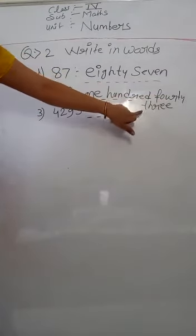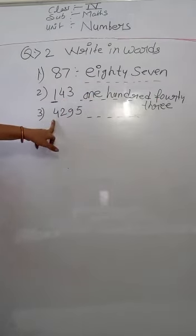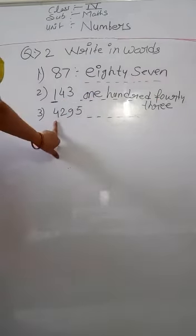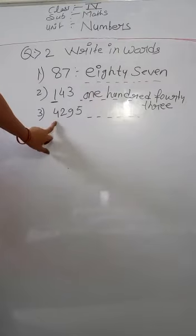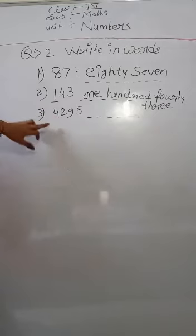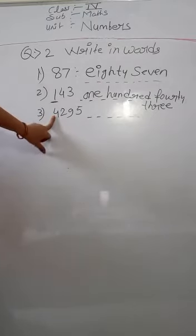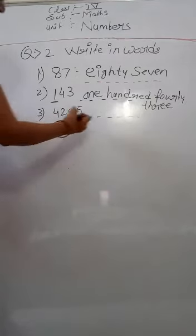143 — clear? Now the next number is 4295. What is the place value of 4? It's 4000. So let's start writing 4295 in words.